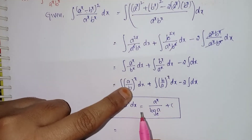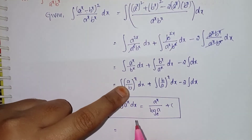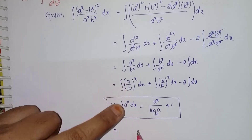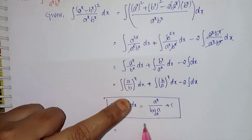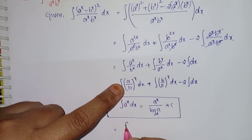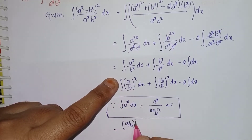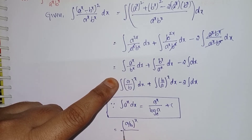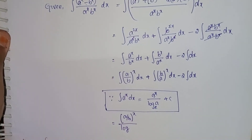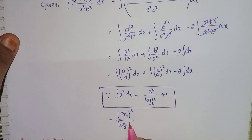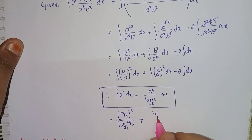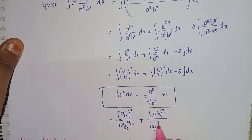Substituting using this formula — treating (a/b) as the base — we get: (a/b)^x divided by log base e of (a/b), plus (b/a)^x divided by log base e of (b/a), minus 2x.